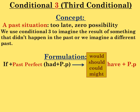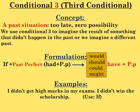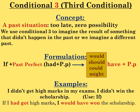We can also use 'could' and 'might'. Let's see examples. The real situation is: I didn't get high marks in my exams, so I didn't win the scholarship. Now we will imagine a different situation: If I had got high marks, the result would be different — I would have won the scholarship.